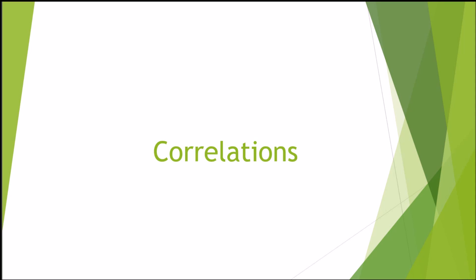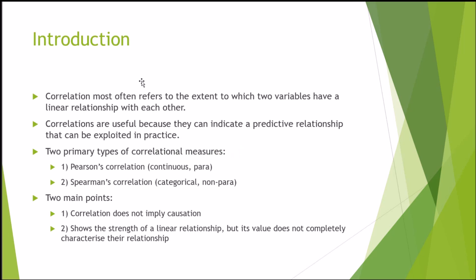In this tutorial, I'm going to be talking about correlations, specifically two types of correlations: Pearson's R and Spearman's R. Correlations most often refer to the extent to which two variables have a linear relationship with each other, and correlations are useful because they can indicate a predictive relationship that can be exploited in practice.